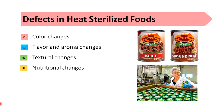Also, flavor and aroma changes can occur in heat-sterilized food. For example, development of cooked flavor in milk due to denaturation of whey proteins can be observed during heat sterilization. Also, there can be texture or viscosity changes. For example, shrinkage and stiffening of muscle tissue of canned meat due to coagulation and loss of water-holding capacity of proteins. This can be overcome by incorporation of phosphates into canned meat, because it helps to bind water and increase tenderness and reduce shrinkage.